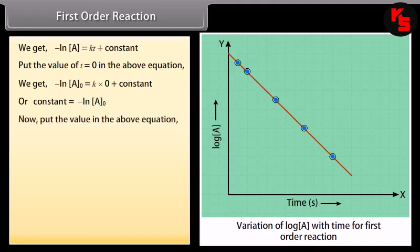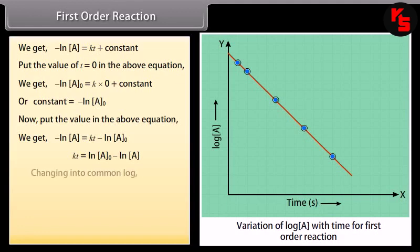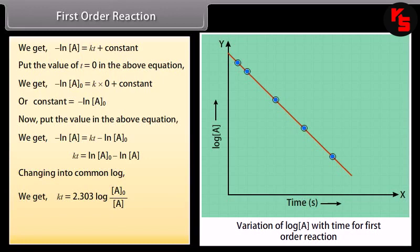Substituting the constant, we get: −ln A = KT − ln A₀. Changing to common logarithm: KT = 2.303 log(A₀/A). Therefore, the first-order rate constant is: K = (2.303/T) log(A₀/A).